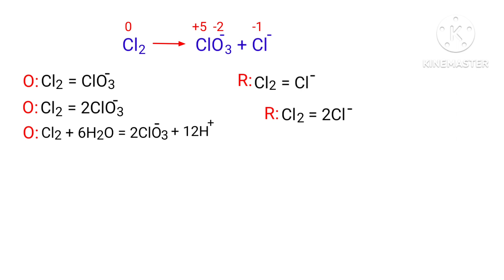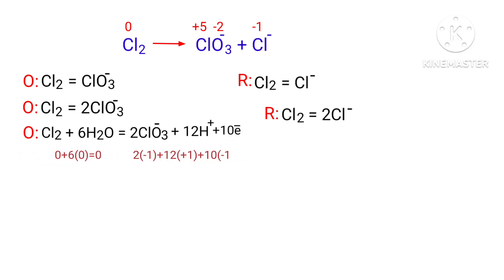For a redox reaction, the addition of charges should be equal on both sides. In the oxidation half-reaction, both sides are not equal. To make them equal you should add electrons — you can't add protons, so adding 10 protons to the left side to make it equal to plus 10 is wrong. But you can add 10 electrons to the right side to make it equal to 0. Now the charges are equaled in the oxidation half-reaction.